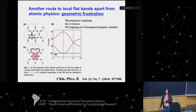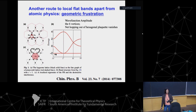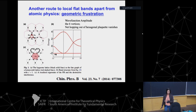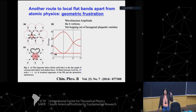Most studies of flat bands have been from localized atomic physics — heavy electron systems like F bands. But in this talk, I'll tell you about another route through geometric frustration. Instead of heavy electrons from F electrons, we have D electrons from transition metal atoms — in this case, iron — and geometric frustration leads to a flat band.